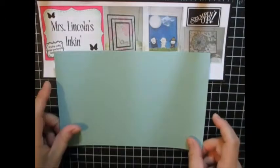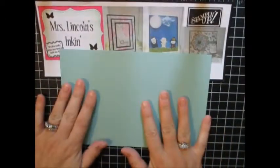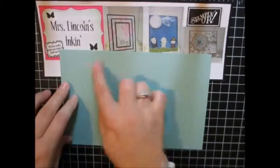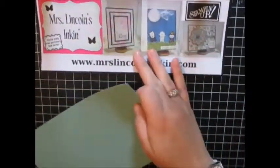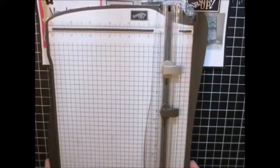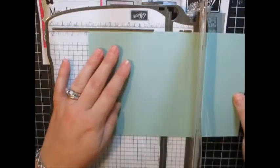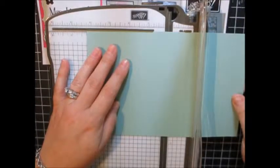First, what you're going to need is a piece of cardstock. And this is just measured at regular size, 5 1⁄2 by 8 1⁄2. And we're going to get our paper trimmer out here. So what we're going to do is we're just going to score this right down the center at 4 1⁄4.